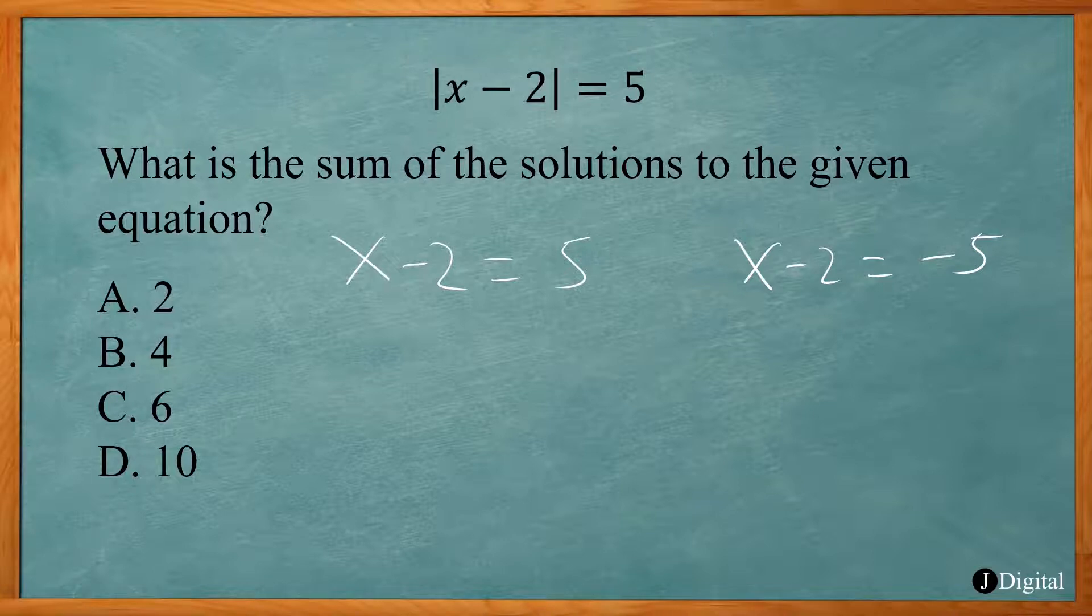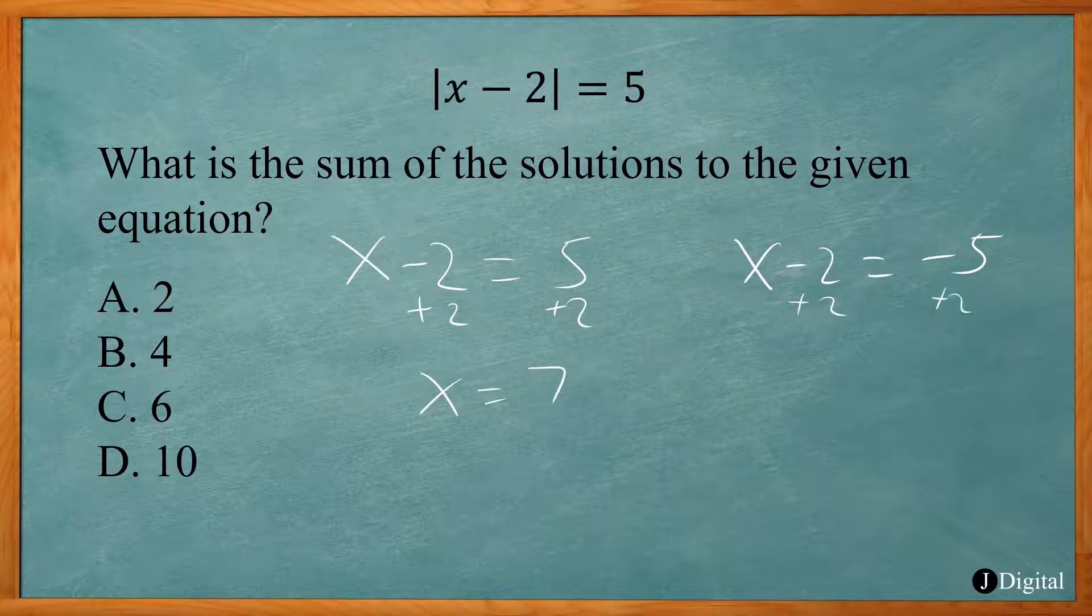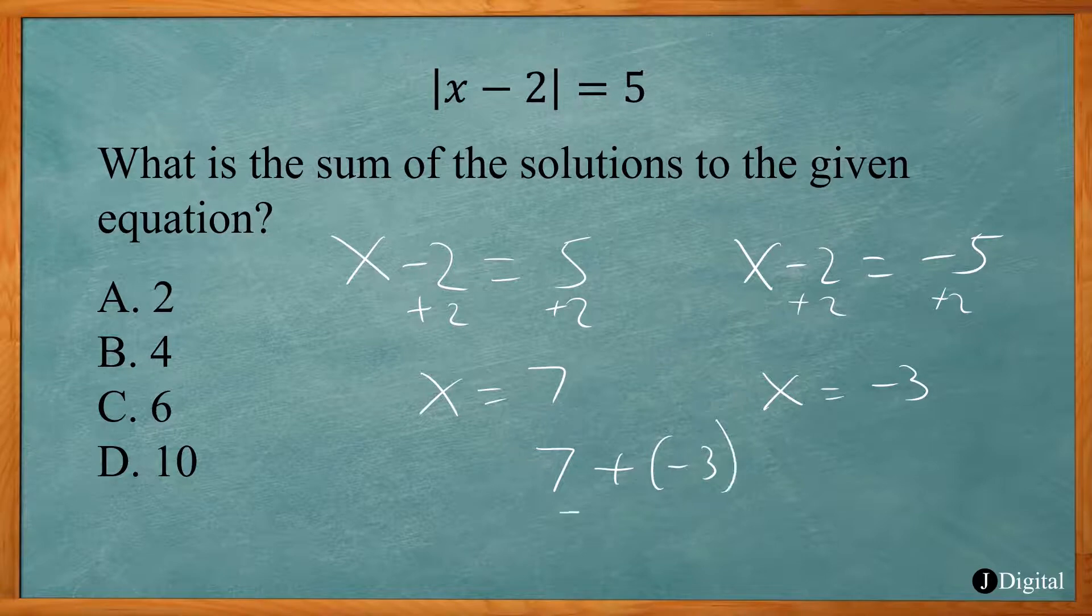You know it would be 7 minus 2 equals 5, and negative 3 minus 2 equals negative 5. But if you don't know that right away, just set up two equations and solve each one. Here you add 2 to both sides, x equals 7. And over here x equals negative 3. We need to add these together: 7 plus negative 3, or basically 7 minus 3, will give you 4. So answer choice B.